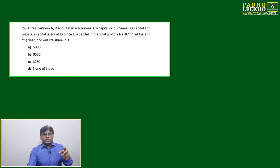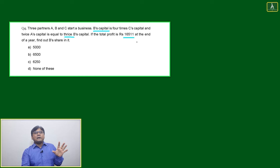Now we'll come to the next question. This question is more complex, like a story. Three partners A, B, and C start a business. B's capital is four times C's capital and twice A's capital is equal to thrice B's capital. If the total profit is 16,511 at the end of the year...